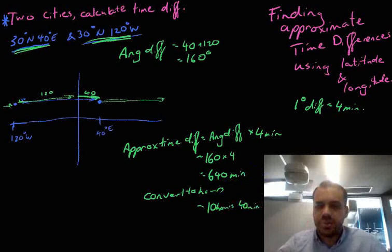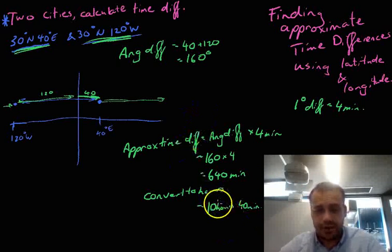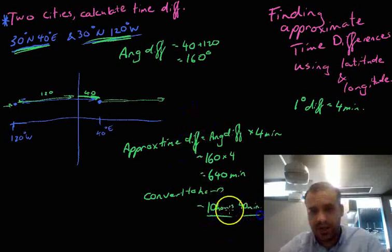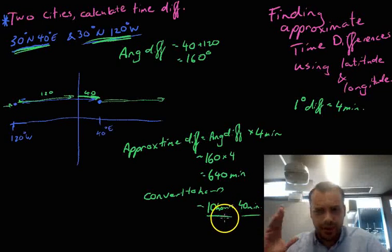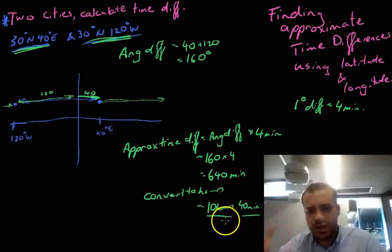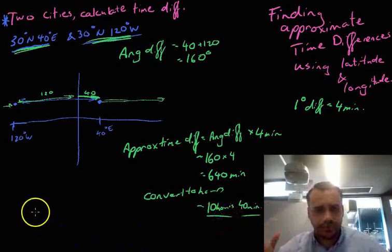Now remember, this is really strange because there's not actually any two places in the world that have an exact time difference of 10 hours and 40 minutes because our time zones are generally on the every hour. Some weird ones are every half hour, but in general, our time zones are every hour.